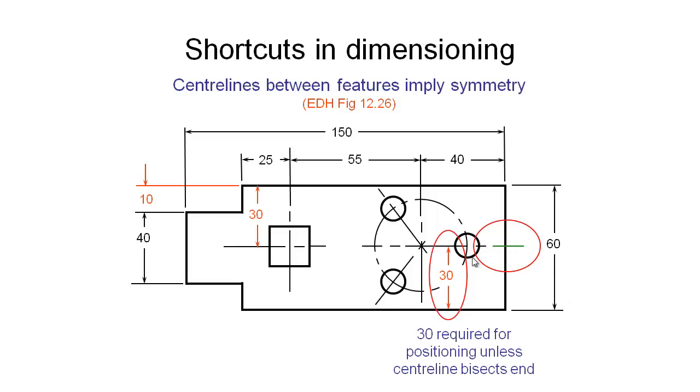We know that this edge is 60, so if this symmetry line crosses over here, we know that both this circle here and also this pitch circle, which we're using to locate these three holes, is located at that distance.